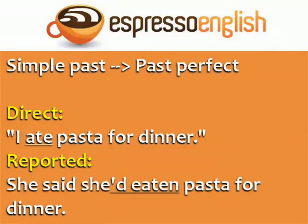Simple past verbs become past perfect. Direct: "I ate pasta for dinner." Reported: She said she'd eaten pasta for dinner.